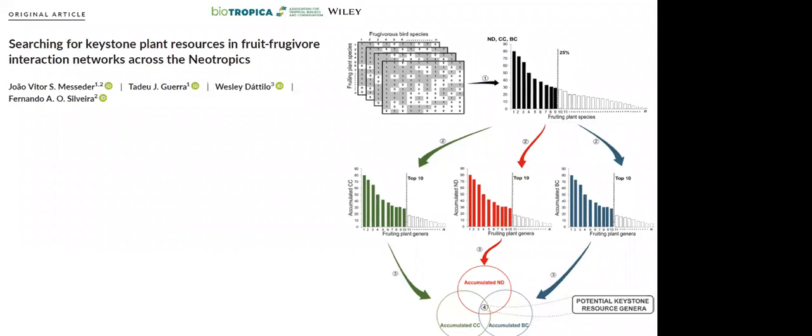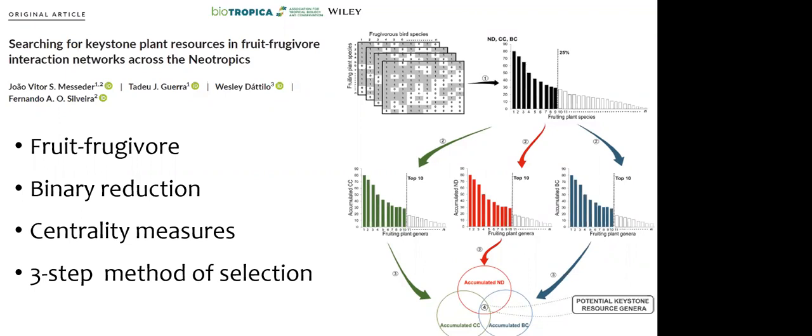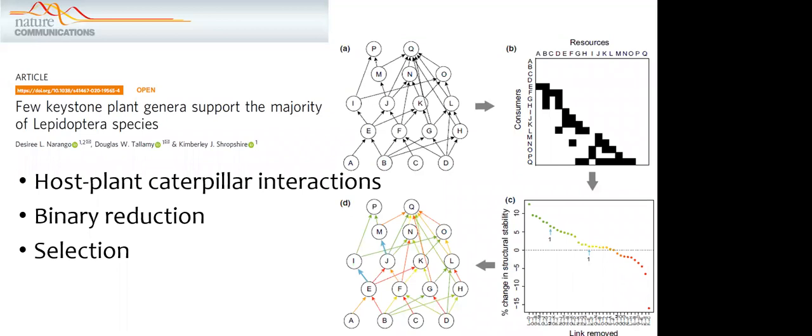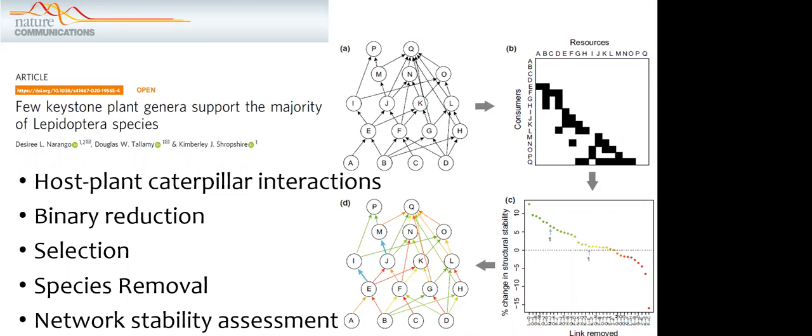The first paper was just published this past year and it looks at fruit-frugivore networks. They're using binary networks, so I would just have to reduce my quantitative to a binary network. They're using centrality measures as a form of selection and then conducting species removal simulations. The other paper I'm looking at just came out a couple weeks ago and this was based on host plant interactions using caterpillars. Again these are binary networks. They have a different selection process than the previous paper, but again there's a removal of species and then an assessment of the network stability. I was able to get a hold of the data and the script for these papers a few days ago so I will be teasing those apart over the next couple weeks.